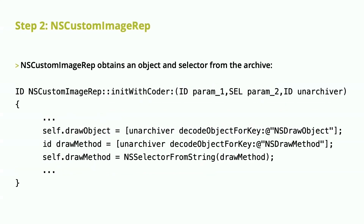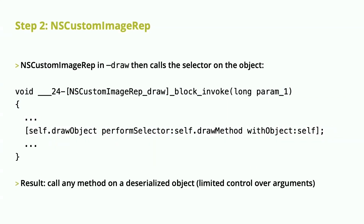The next step was NSCustomImageWrap. It obtains an object and a selector from the archive — a selector is basically a function pointer for an Objective-C method — and stores them. But when you call draw on that object, it calls the selector on the stored object. Combining this with the previous step, where we can call zero-argument methods, we can call the draw method on NSCustomImageWrap to invoke any method — though without control over arguments; it passes itself as the first argument, with other arguments being random register data.